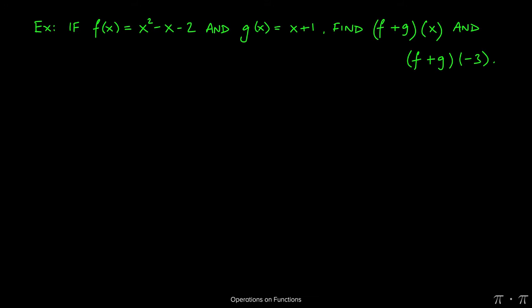In this section we'll talk about operations on functions. Let's say we're given two functions: f(x) and g(x). f(x) equals x squared minus x minus 2, and g(x) equals x plus 1. We're asked to find what (f + g)(x) would be, and also what (f + g)(-3) would be.